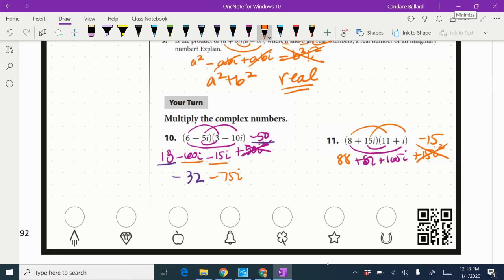88 minus 15, if I look at that, 88 minus 15 is going to be 73. And 8i and positive 165i is positive 173i.